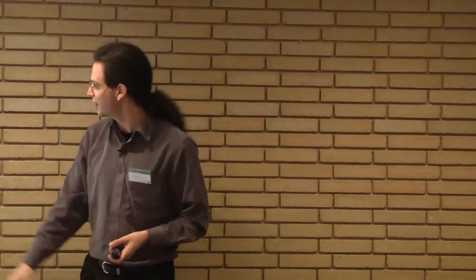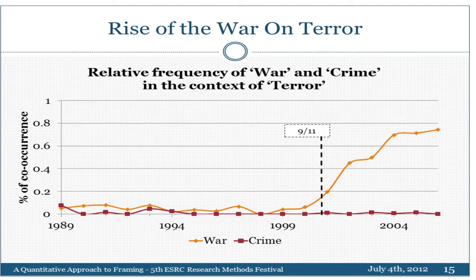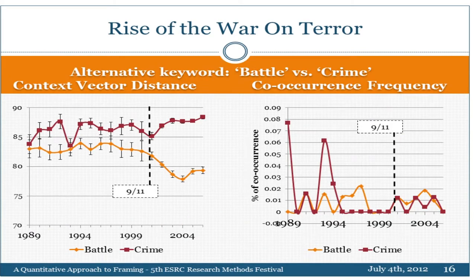Looking at the distances directly, you can see that after 2001 there is a dramatic drop in the distance between terror and war — terror is the zero point, so the lower you are, the closer you are. We're using the semantic vector space to calculate distances between uses of the word 'terror' and its two possible frames of war and crime. We can also see a similar shift by looking at how frequently the terms war and crime co-occur in a window around terror. However, if instead of 'war' we look at 'battle,' we get the same distance pattern but not the co-occurrence pattern, because 'battle' rarely co-occurs with 'terror.' So using this method you gain leeway in choosing frame words, since you're selecting a semantic field rather than a specific word.